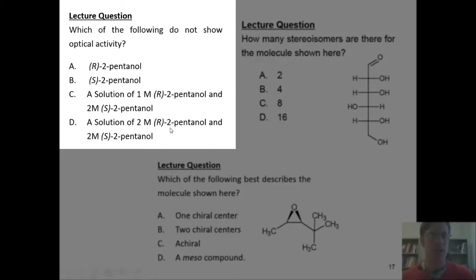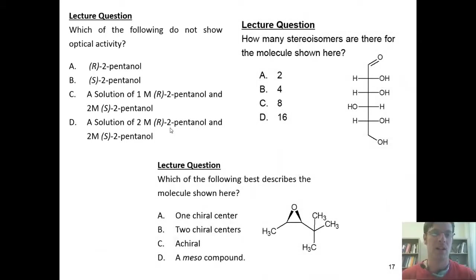What about option D? Well, option D is where I've got a complete 50-50 mixture of two molar R-2-pentanol and two molar S-2-pentanol. Because they're present in a totally 50-50 mixture, called a racemic mixture, any optical activity induced by one enantiomer is canceled out by the optical activity induced by the other enantiomer. Hence, option D will show no optical activity and is, therefore, the correct answer.